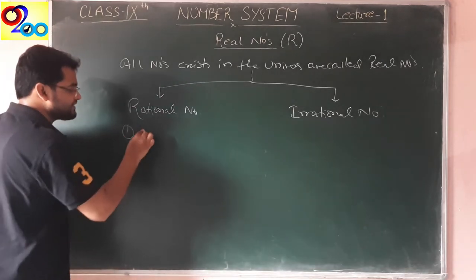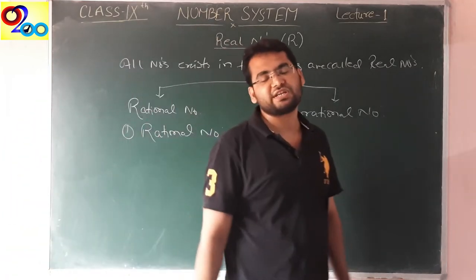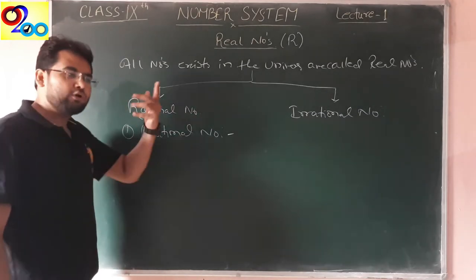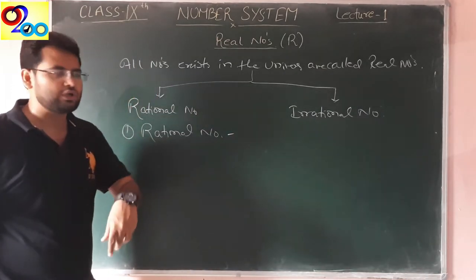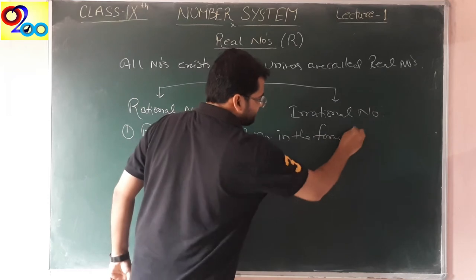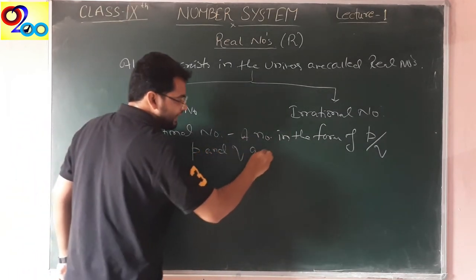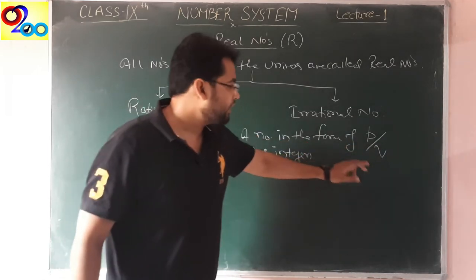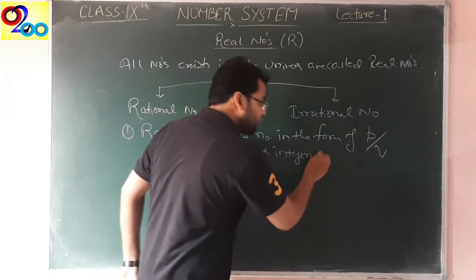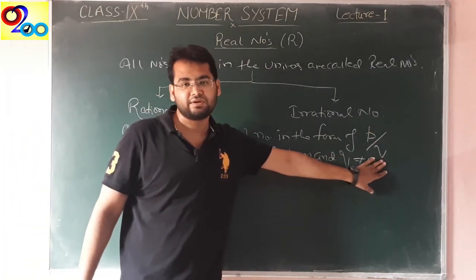The first number is rational number. What is a rational number? Any number in the form of p by q — or a by b — where both numerator and denominator are integers and the denominator must not be equal to zero, that is a rational number. We can write it as a number in the form of p by q, where p and q are integers. Any fraction in p by q form where both numerator and denominator are integers is a rational number.